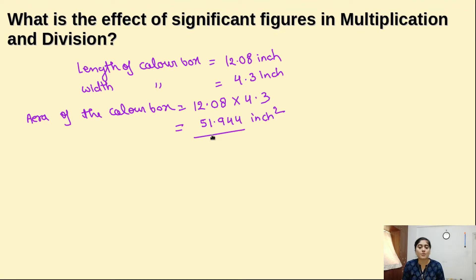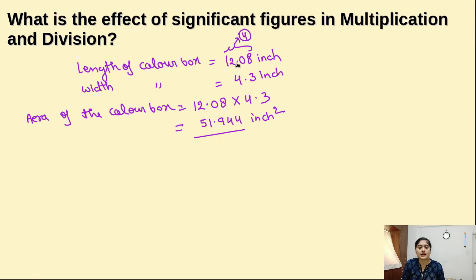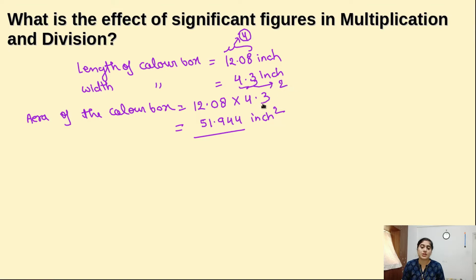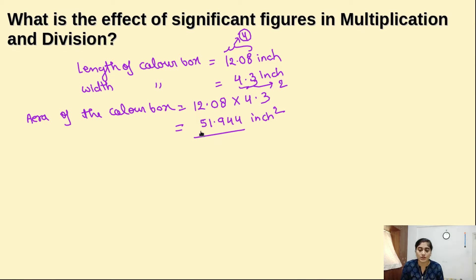Now we have to determine how many significant digits to keep in that area. Here we are multiplying two values. In 12.08, there are 4 significant figures — 1, 2, 3, 4 — because the zero comes after the decimal and is between two non-zero digits, so it is significant. In 4.3, there are only 2 significant figures. We take the least significant figures, which is 2. So we round off to 52 inch square.